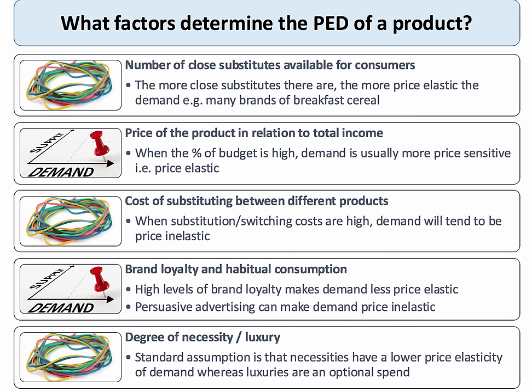The second factor is the price of the product relative to the consumer's income. Products that take up a high percentage of income will tend to have a more elastic demand because any given price change does matter. A third factor is the cost of switching between different products. There may be some costs involved in switching, in which case demand tends to be inelastic. For example, mobile phone service providers may require a contract, locking in consumers once a choice is made. Equally, when the cost of substitution is low, demand tends to be more price elastic.